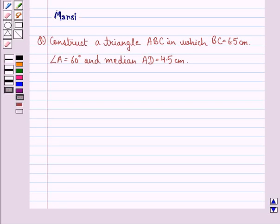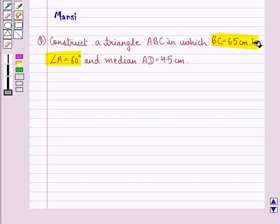Hi and welcome to the session. Let's work out the following question. The question says, construct a triangle ABC in which BC is 6.5 cm, angle A is 60 degrees, and median AD is equal to 4.5 cm.